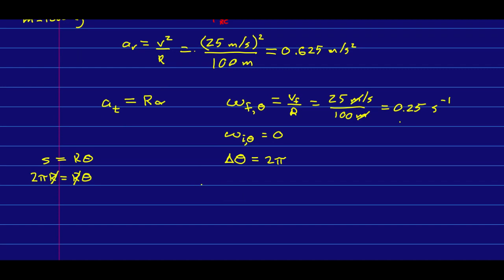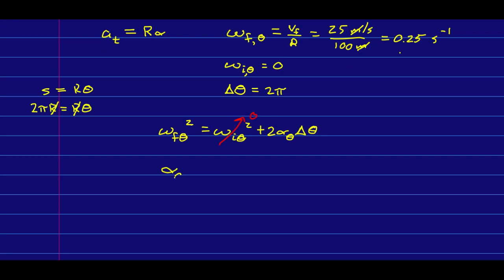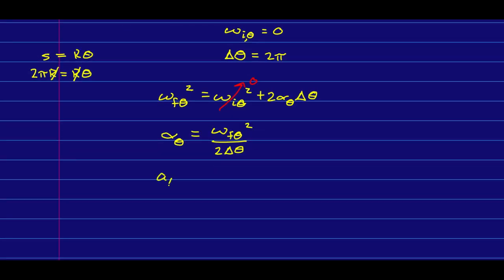Well, so now we can find the acceleration because we have a uniformly angularly accelerated motion equation. And so this gets us alpha. And so then what we really want is the tangential acceleration, which is just r times this. And that is about 0.5 meters per second squared.